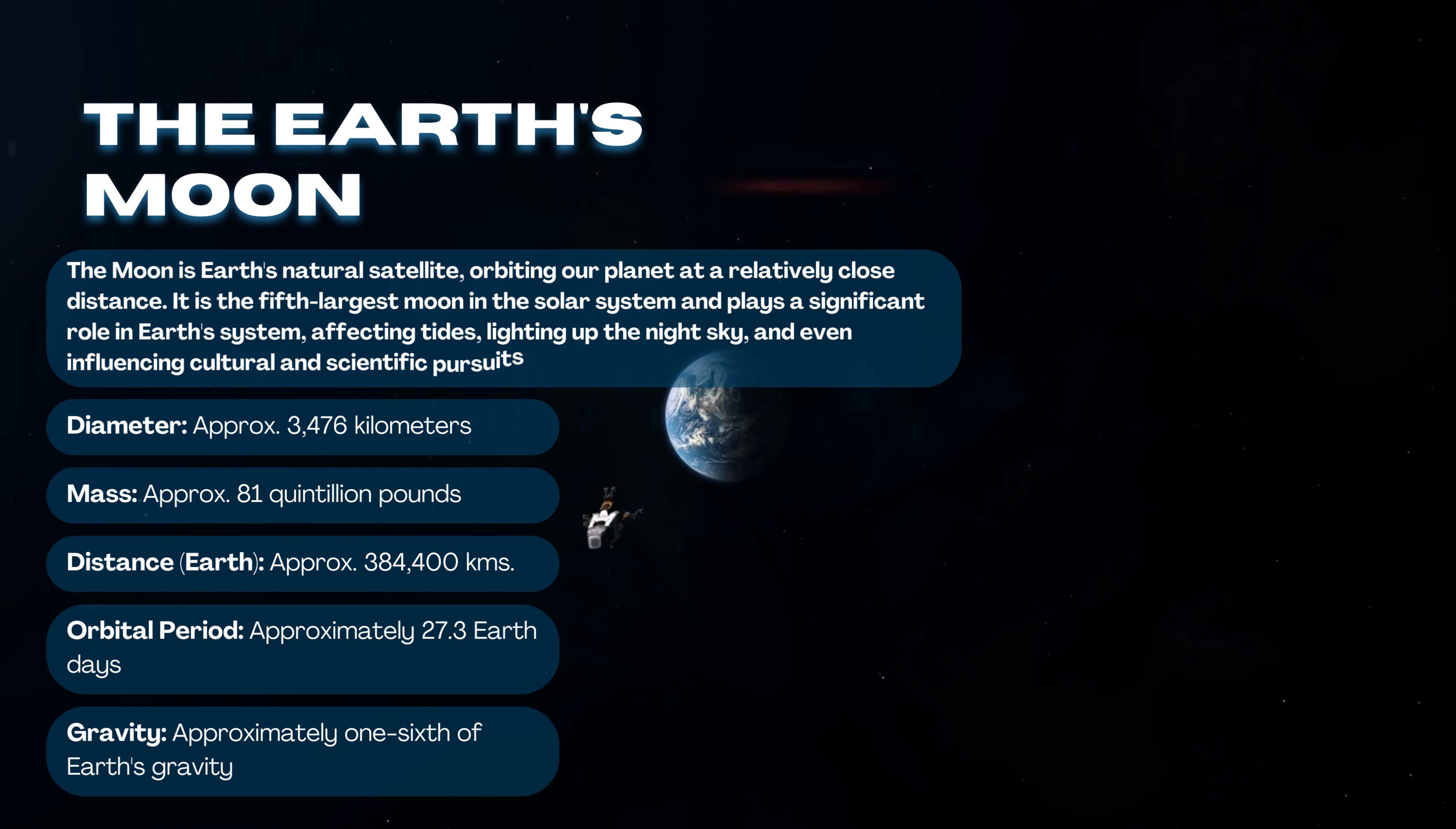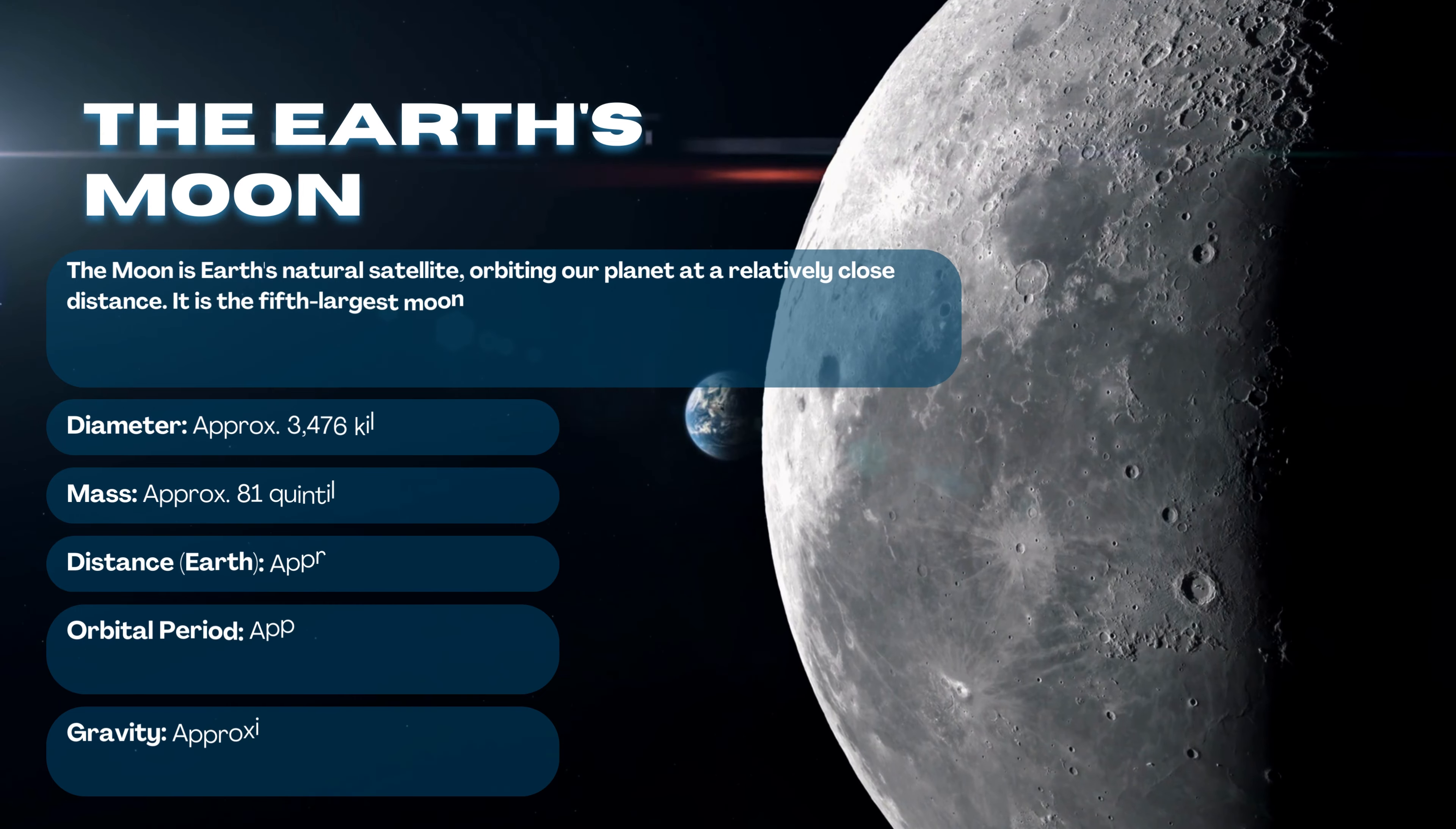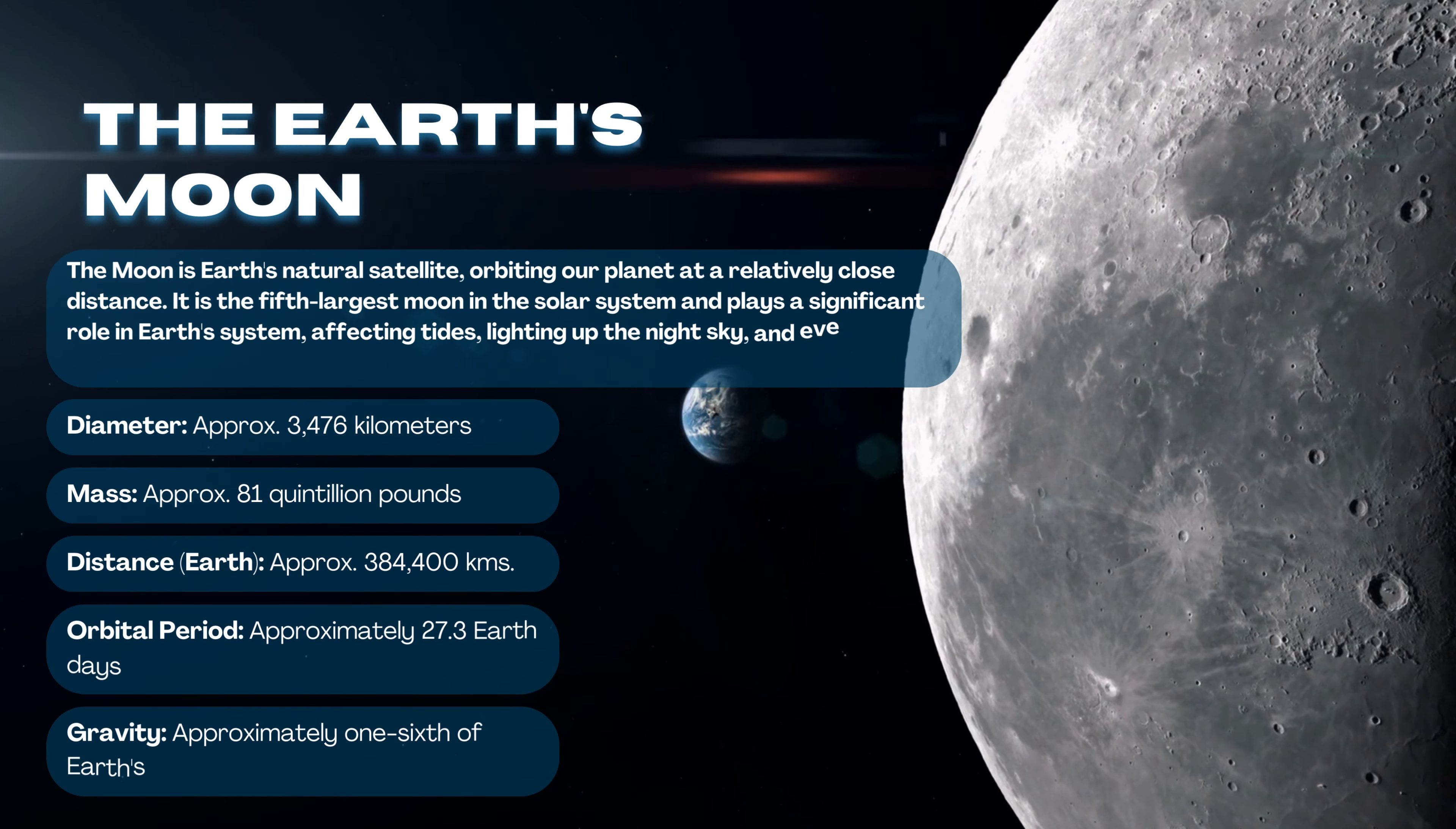Orbital period: approximately 27.3 Earth days. Gravity: approximately one-sixth of Earth's gravity.